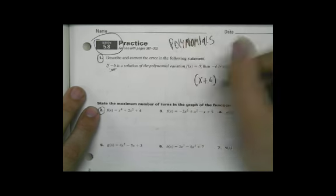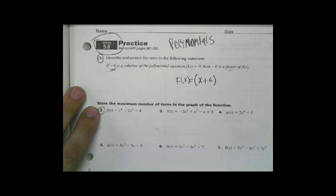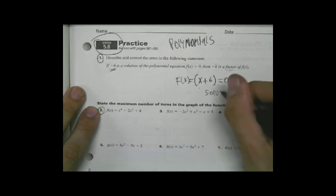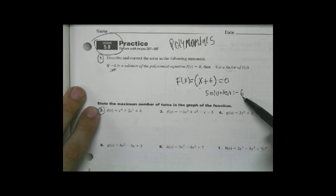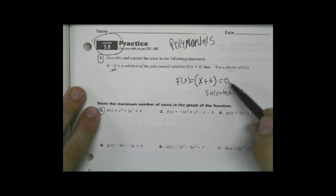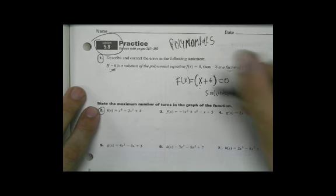Because if this is f of x, and if f of x equals 0, what's a solution to this? Well, a solution would be negative 6, because if we put the solution negative 6 in there, then we get a solution that equals 0, and then x plus 6 would be the factor. So that's the confusion there.